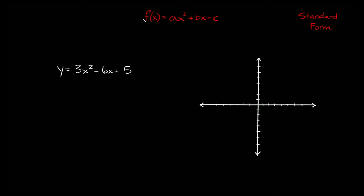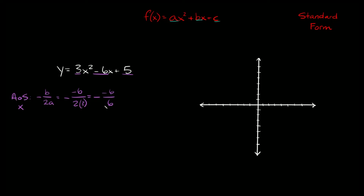Now let's graph something in standard form. Standard form is f of x equals ax squared plus bx plus c, where a and b are your coefficients and c is your constant. Here we have y is equal to 3x squared minus 6x plus 5. To graph these, you first need to find the axis of symmetry using the formula negative b over 2a. Here that's negative negative 6 over 2 times 3, which gives negative negative 6 over 6, and negative 6 divided by 6 is negative 1, times the negative gives positive 1. So the axis of symmetry is x equals positive 1.